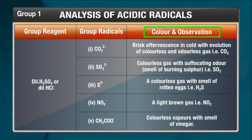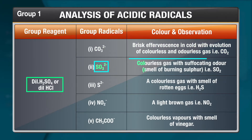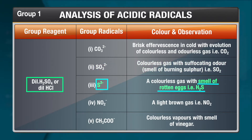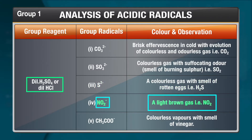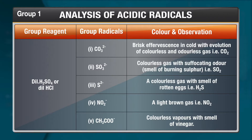For that, I have written the color and the observation that you will have. If the salt has the carbonate ion, detected by dilute H2SO4 or dilute HCl, you will get a brisk effervescence in cold with evolution of colorless and odorless gas — carbon dioxide. For sulfite, you get a colorless gas with suffocating odor — sulfur dioxide. For sulfide, you get the smell of rotten eggs due to hydrogen sulfide. For nitrite, a light brown gas — nitrogen dioxide. For acetate ion, vapors with the smell of vinegar.